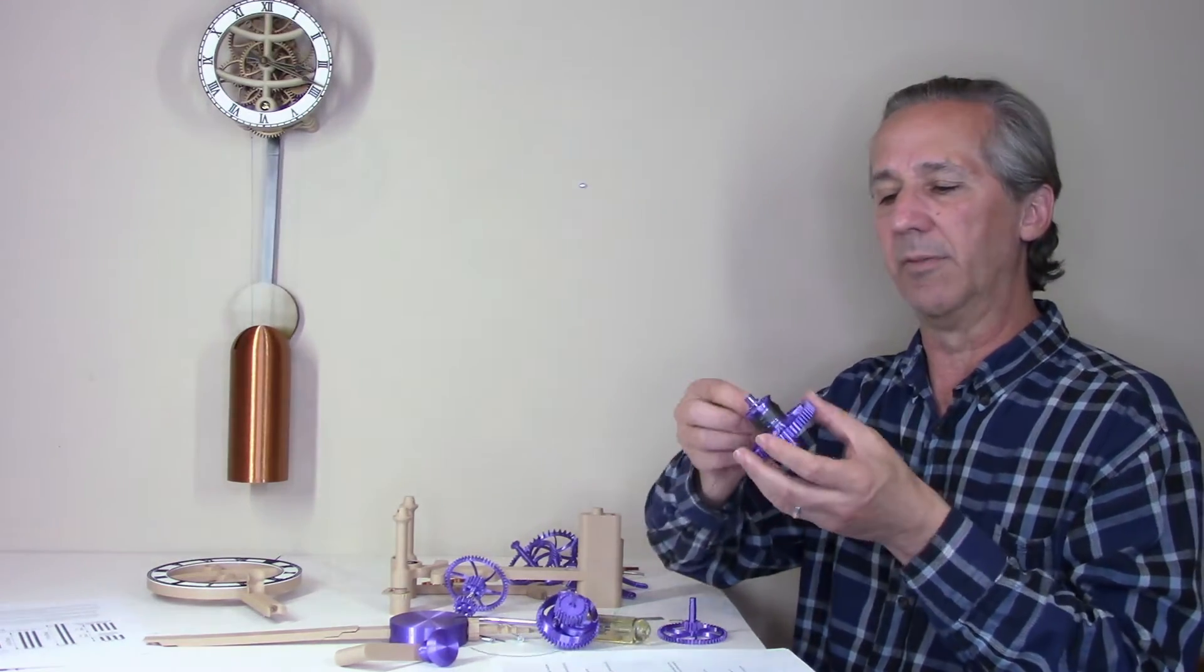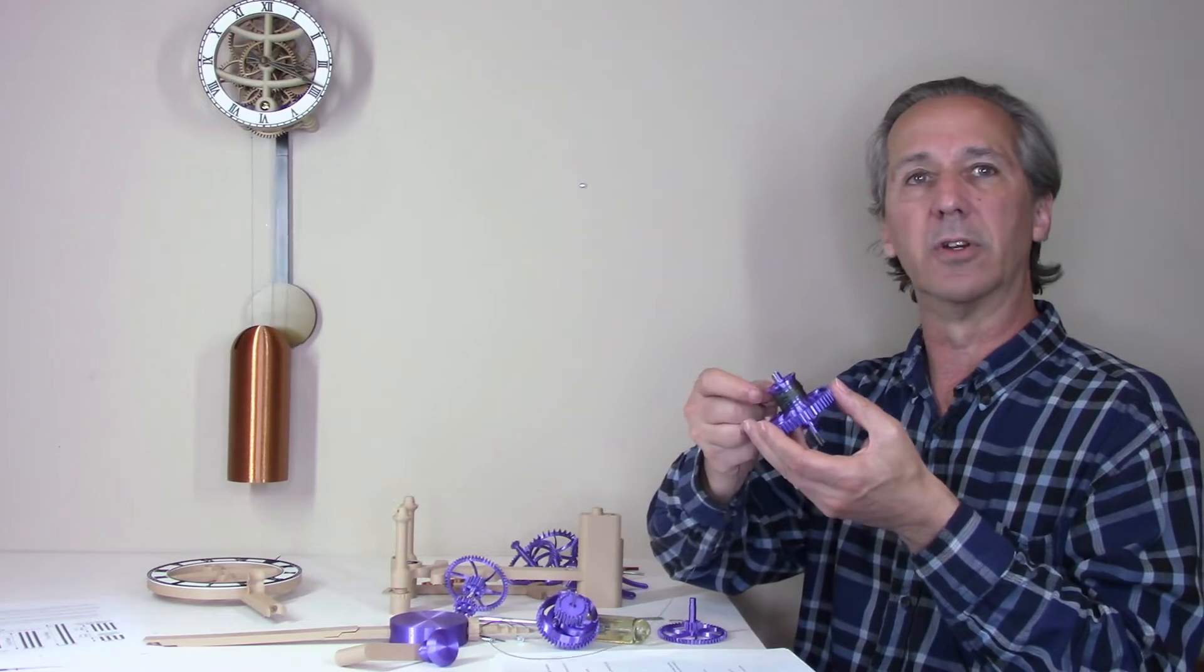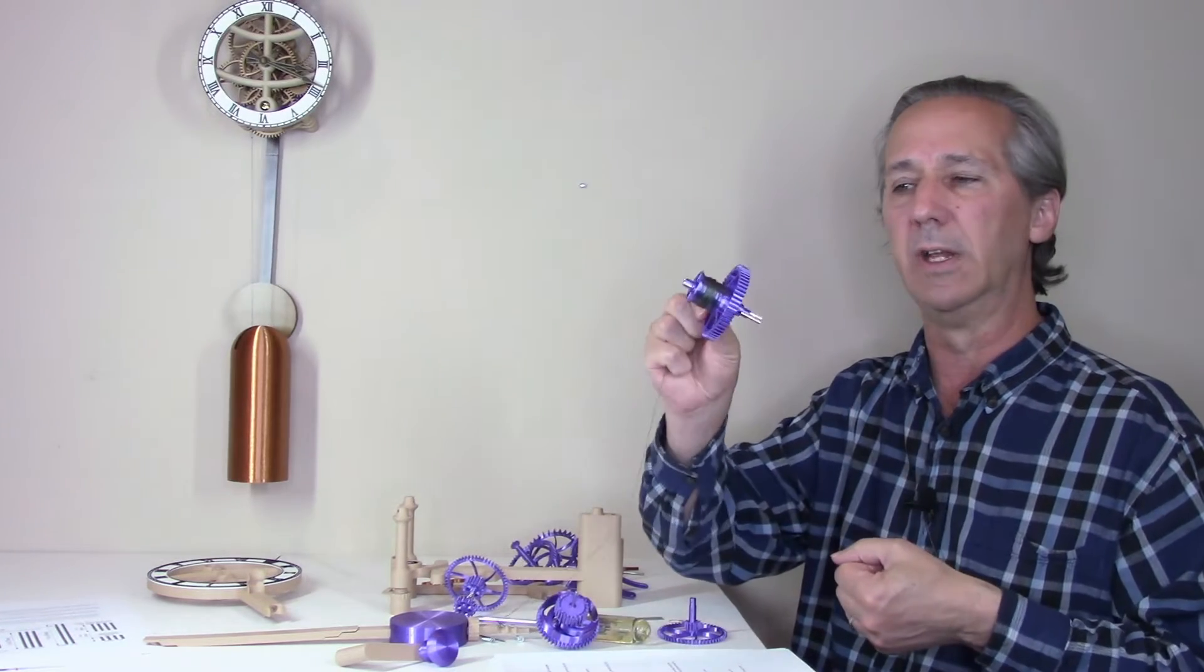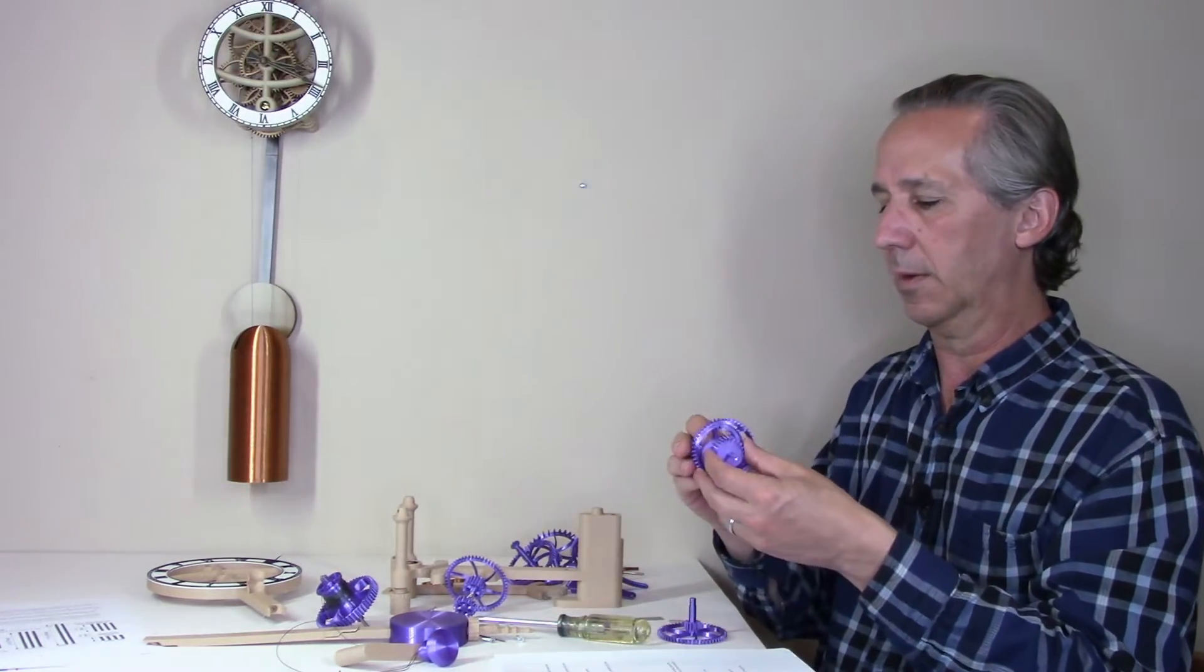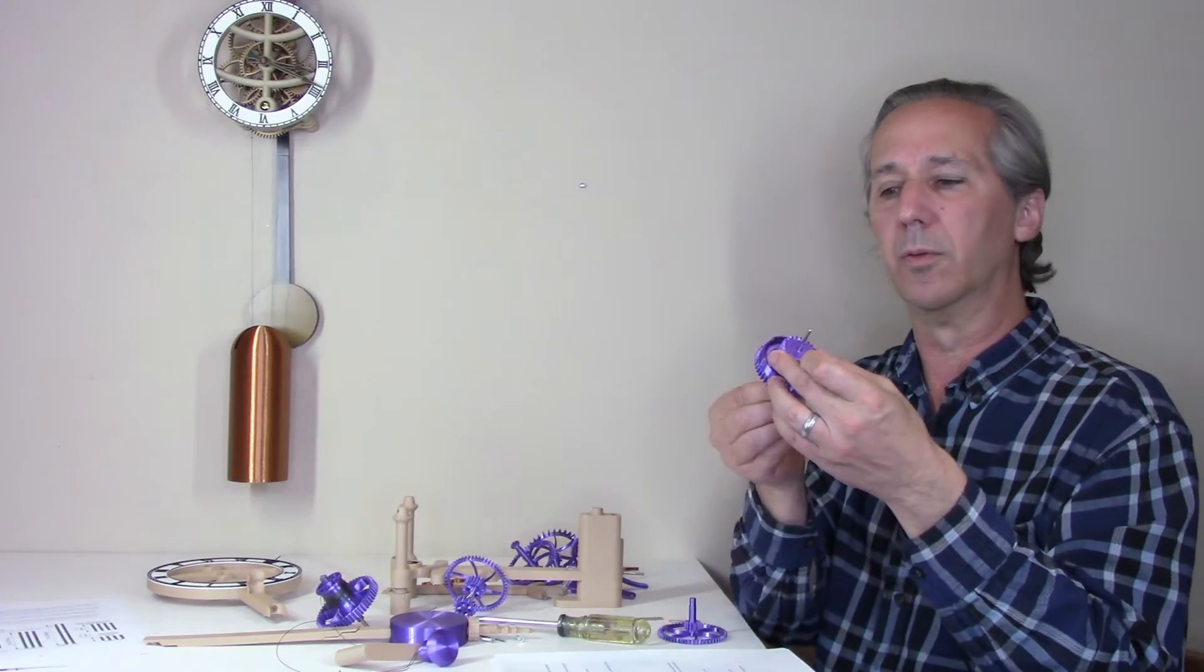Start by assembling everything in the order shown in the manual, including the winding drum and the ratchet.